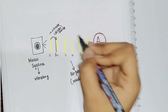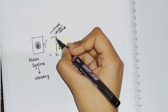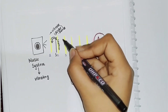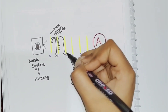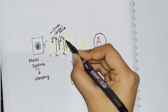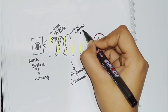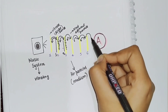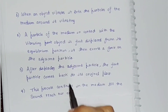Particle 2 then disturbs particle 3, which is its neighboring particle. Particle 3 then disturbs particle 4, particle 4 disturbs particle 5, and the energy keeps transferring. This process continues until the sound reaches person A. Each particle returns to its own position after transferring energy to the next adjacent particle.